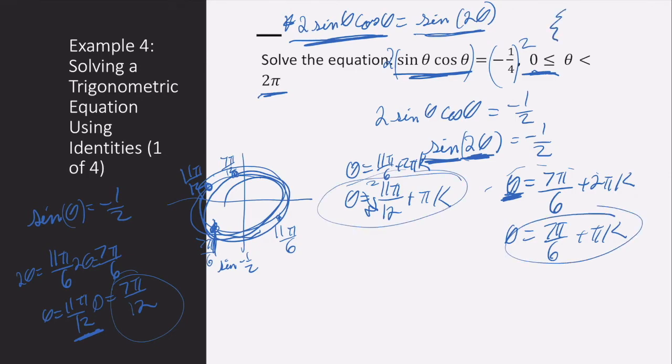I already have two solutions. I have eleven pi over twelve and seven pi over twelve. But there's going to be another one.